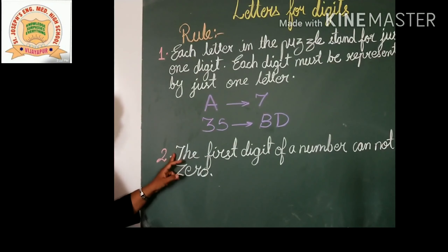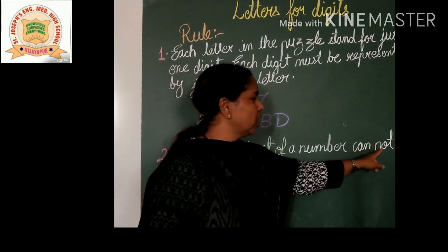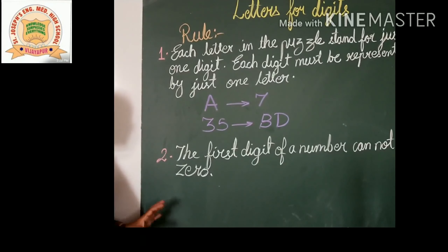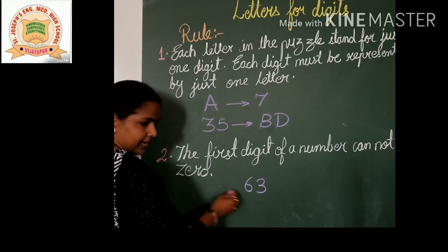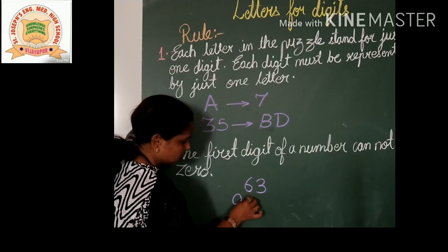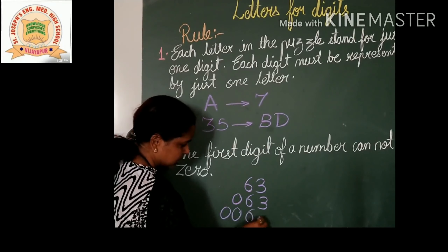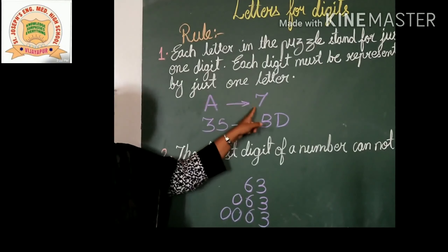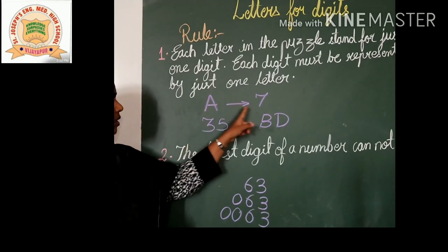Now the second rule: the first digit of a number cannot be zero. See, if we want to write 63, we will write 63. We never write 063 or 0063. So the first rule is each letter stands for one digit — one letter, one digit.